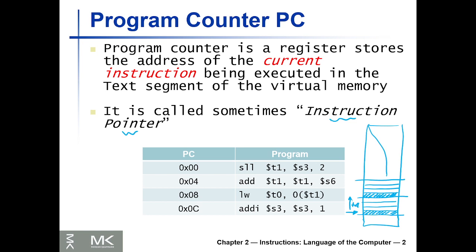For example, here we have a program of four instructions. Let's assume for the sake of the example the first instruction at location zero is shift left logic T1, S3, and 2. Once the program or the microprocessor fetches this instruction and executes it, to execute the next instruction the PC will be incremented by four.